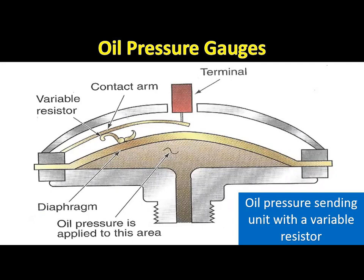A second type of oil pressure gauge is a mechanical system. In this type, oil is piped directly to the gauge itself, and the pressure works similarly to any other air or fluid pressure gauge.